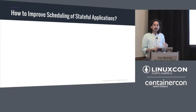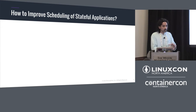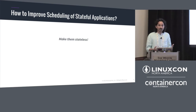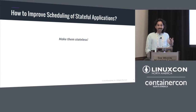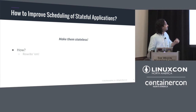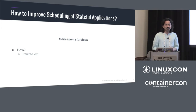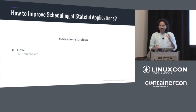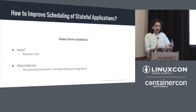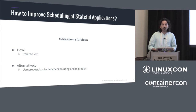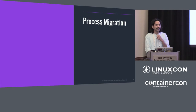The question then is: how can we make it better for stateful applications to survive in this world optimized for stateless ones? The answer sounds simple — make them stateless. But how? Rewrite them from scratch as stateless applications — which is not scalable and not something you'd want to tell developers to do. The alternate is to combine the application with the notion of process or container checkpointing, and then do migration on top of that.